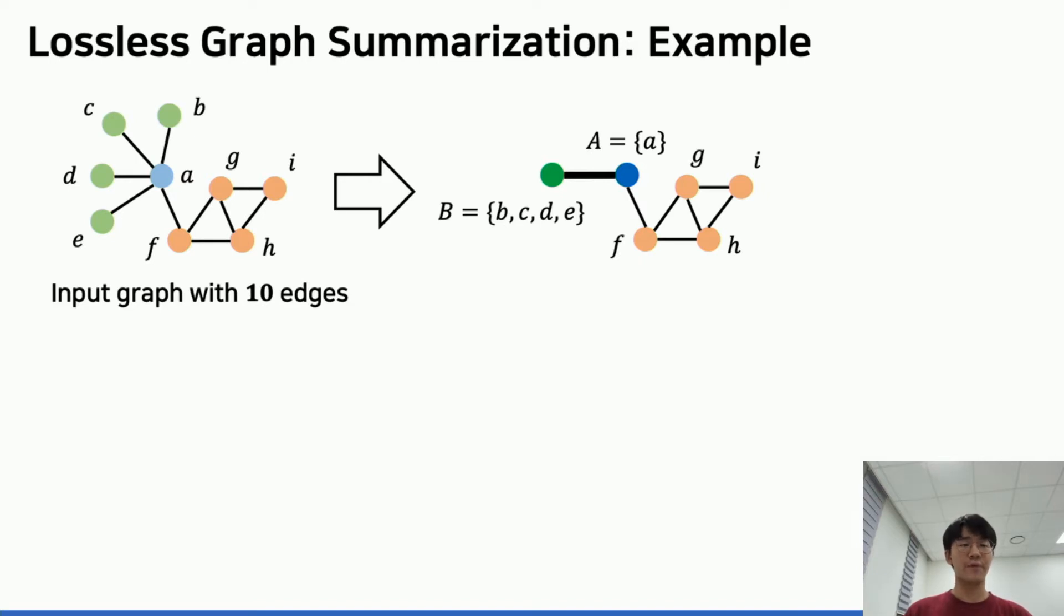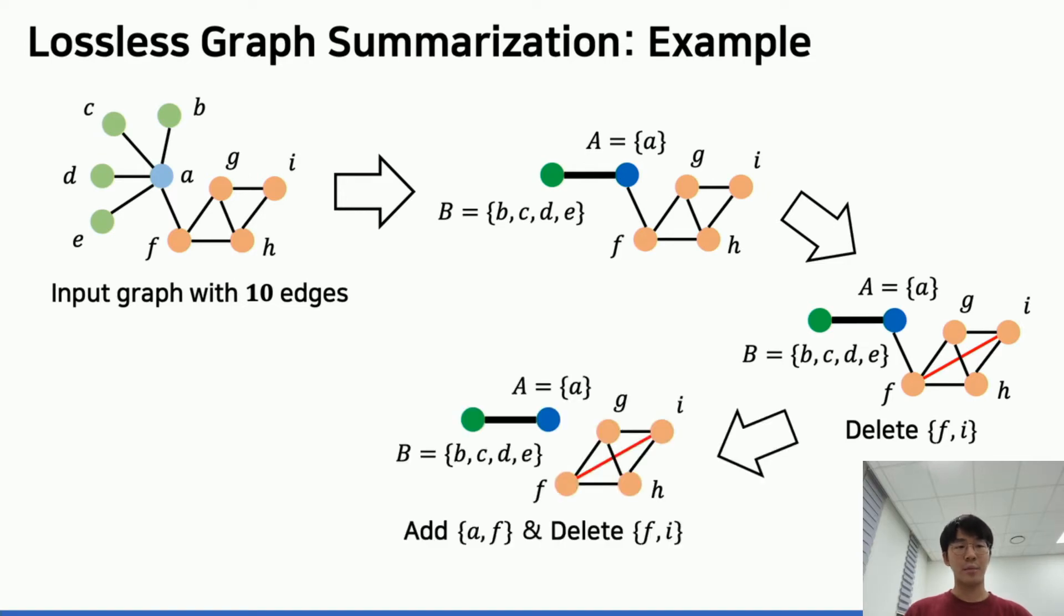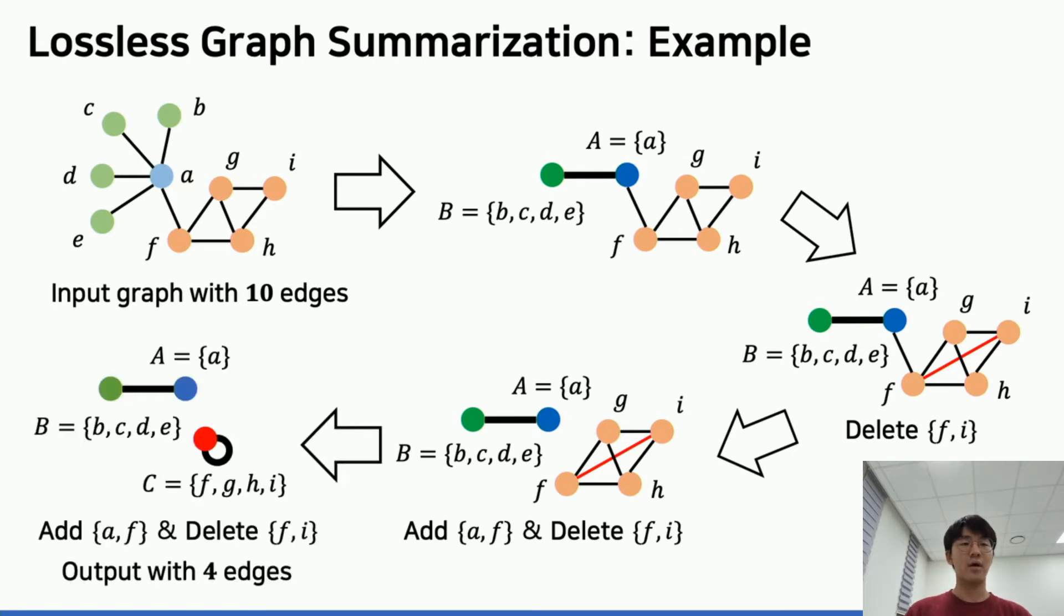The solution is to view the connection between the blue and green nodes as a single high-level connection between these two color groups. Furthermore, the four red nodes are close to a clique. Let's tentatively add an edge between nodes I and F, then tentatively delete edge AF. Finally, we can express the complete graph as a self-loop of the red group.